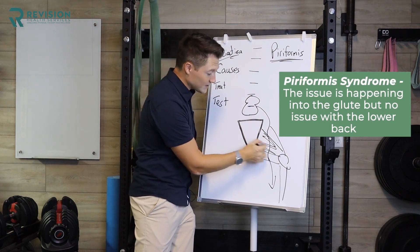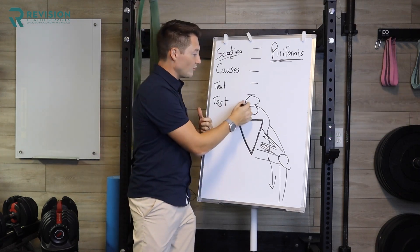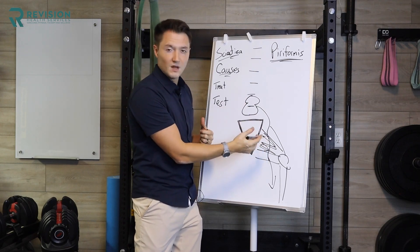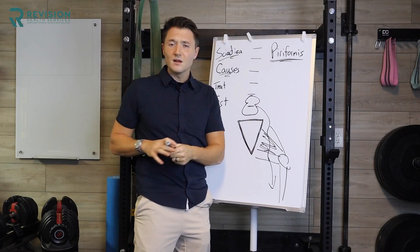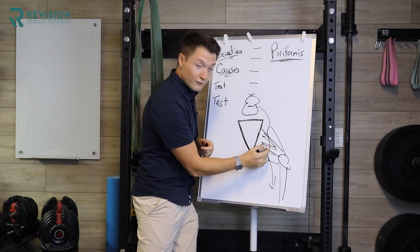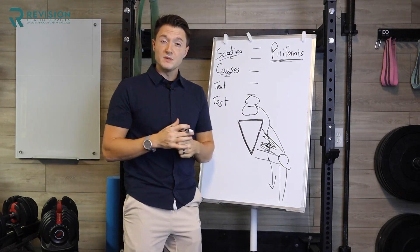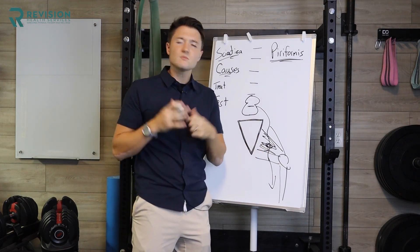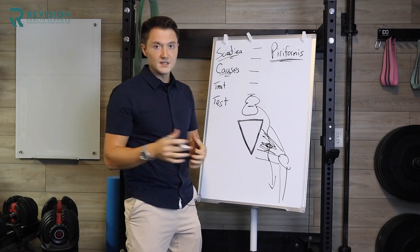With piriformis syndrome, the issue is happening in the glute — there is no issue with the lower back. That's why sciatica is much more common than piriformis syndrome, because back issues are more common than buttock issues due to muscle. Piriformis syndrome is typically caused from microtrauma — working out a lot, sitting a lot, being a truck driver with a wallet in your back pocket — causing repetitive trauma to the piriformis muscle, irritating the sciatic nerve. Macrotrauma causes include falling on your butt, a bad fall onto your glute, or having had a hip replacement or surgery in the area causing scar tissue around the piriformis muscle.